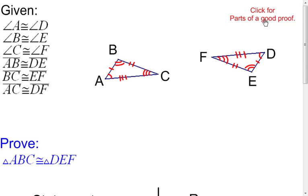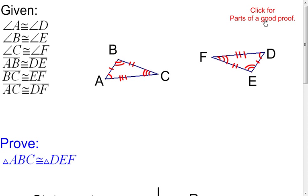Part four is to state what is to be proved. It tells us we're trying to prove that triangle ABC is congruent to triangle DEF. To say two triangles are congruent, we need three sets of corresponding congruent angles and three sets of corresponding congruent sides. I look at the picture and I have all of that, so in my mind I already know these two triangles are congruent.